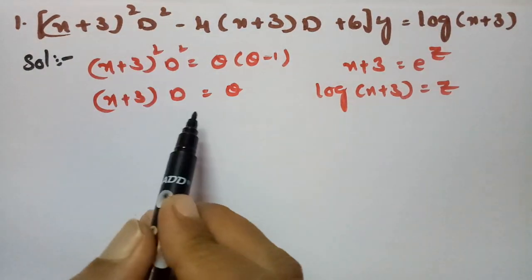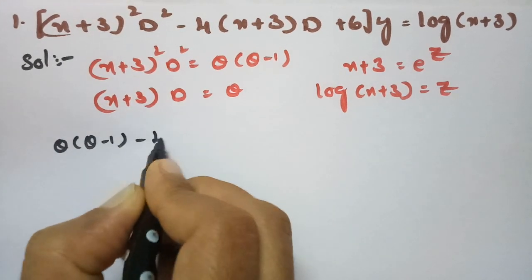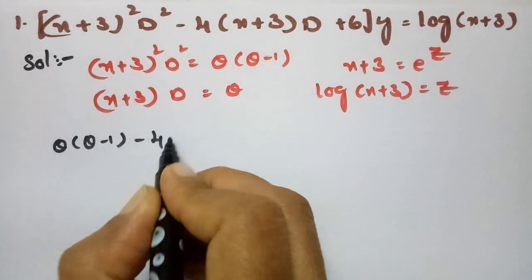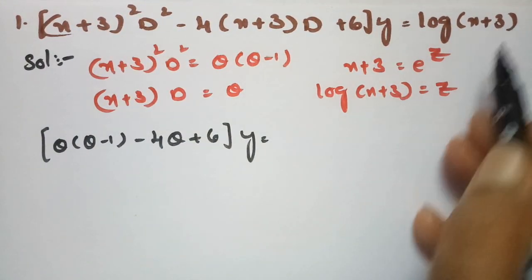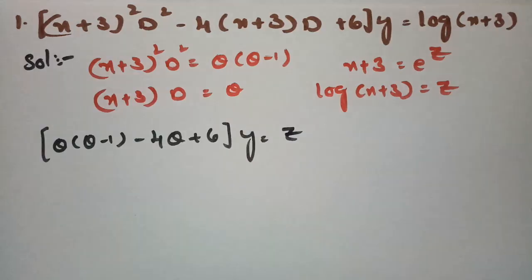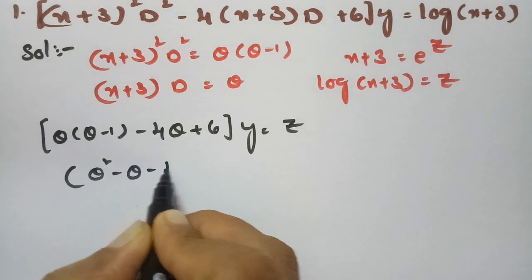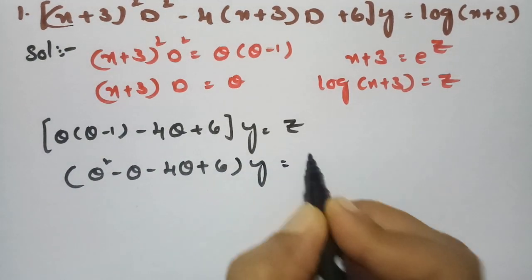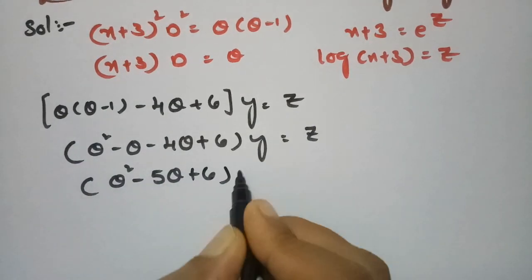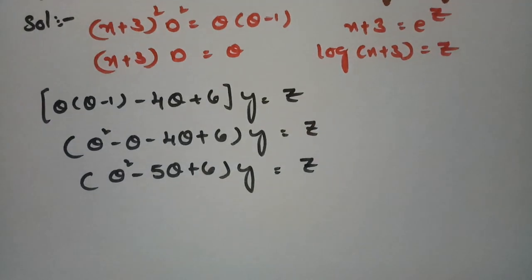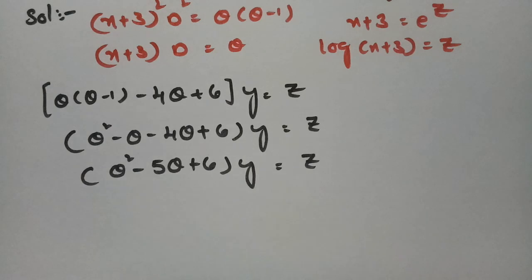So (x+3)^2·D^2 is replaced by θ(θ-1). Substituting, we get: θ(θ-1) + 4θ + 6 of y = log(x+3) = z. Simplifying: θ^2 - θ - 4θ + 6 of y = z, which gives θ^2 - 5θ + 6 of y = z. To find the complementary function we need the auxiliary equation.